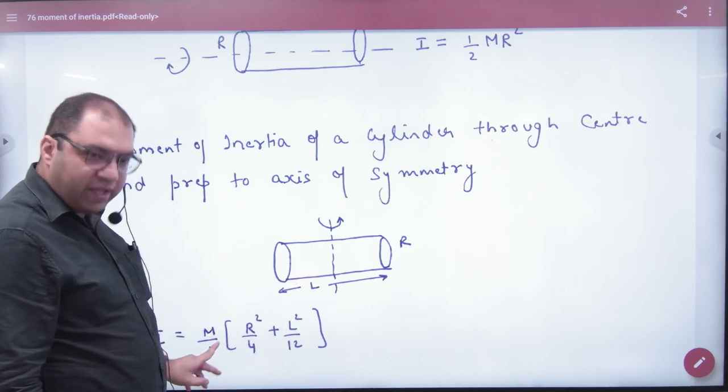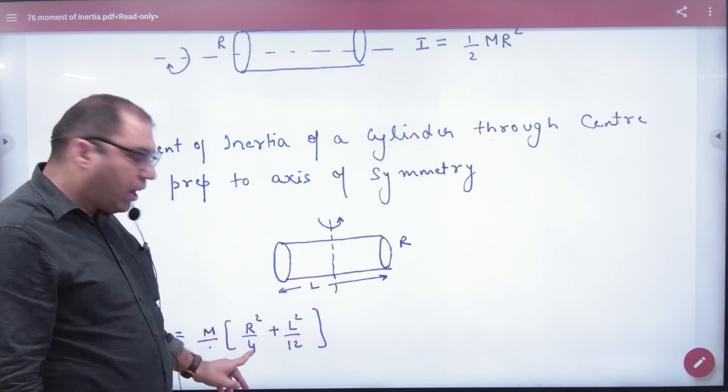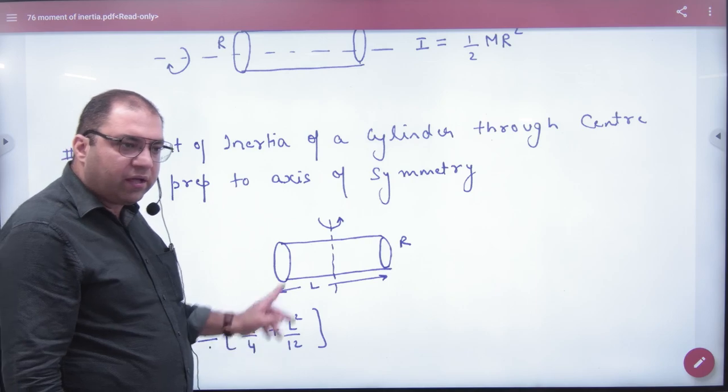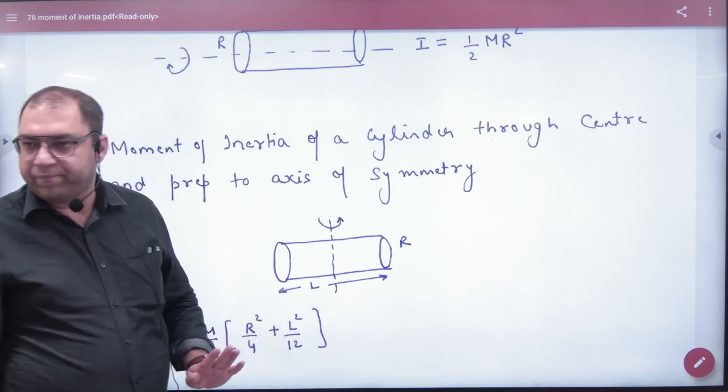For this axis, it is M into R²/4 plus L²/12. Okay?